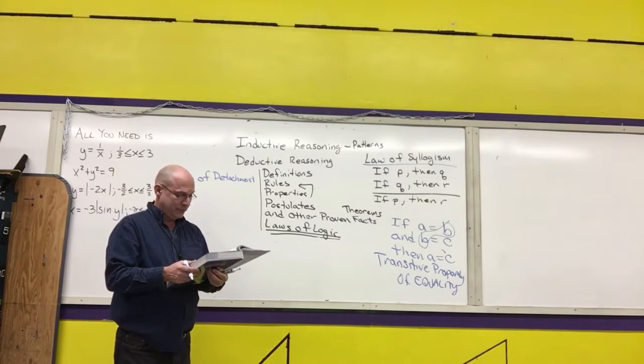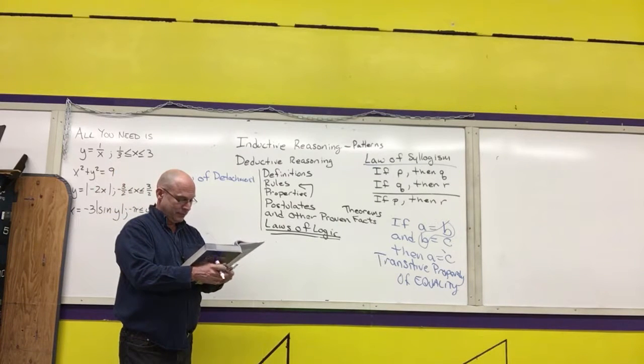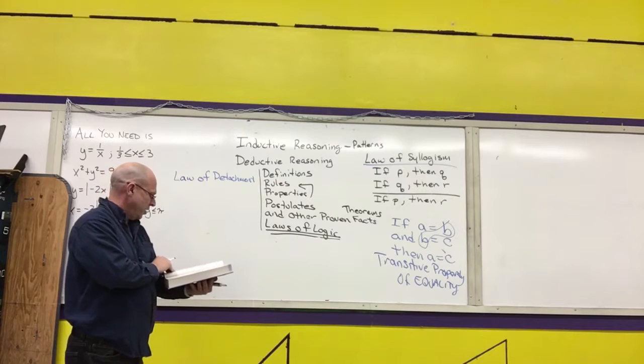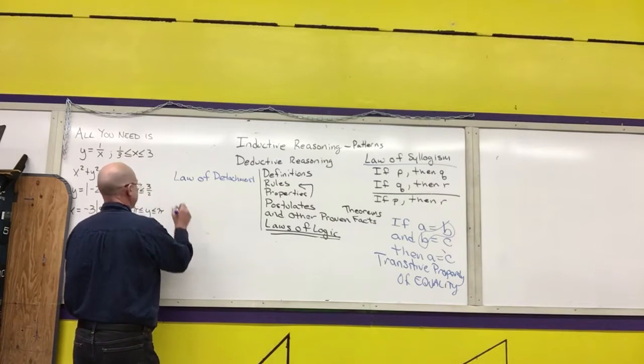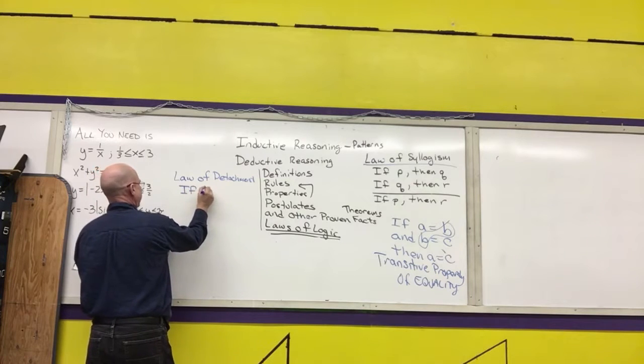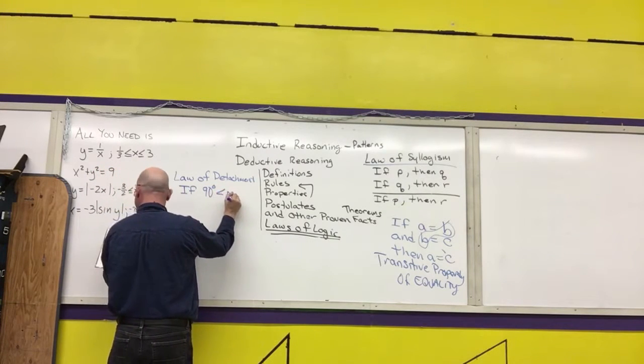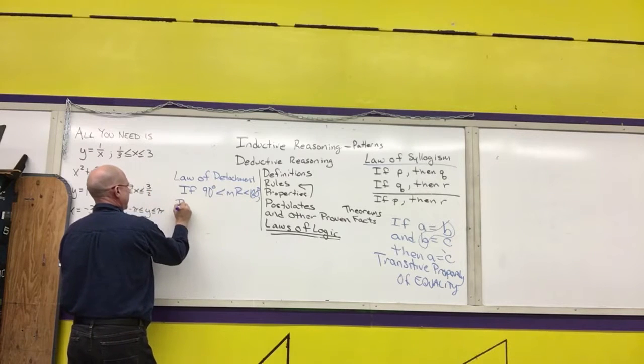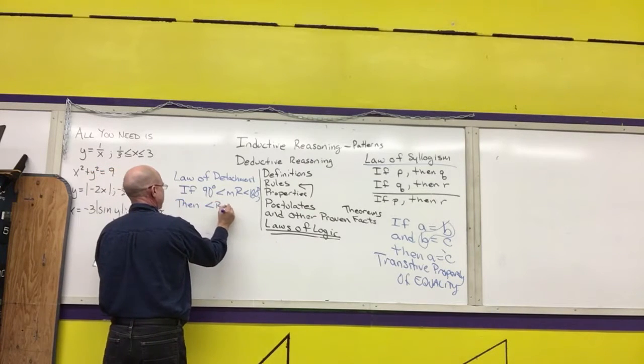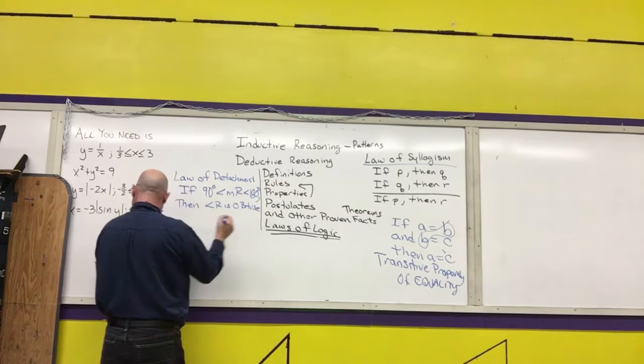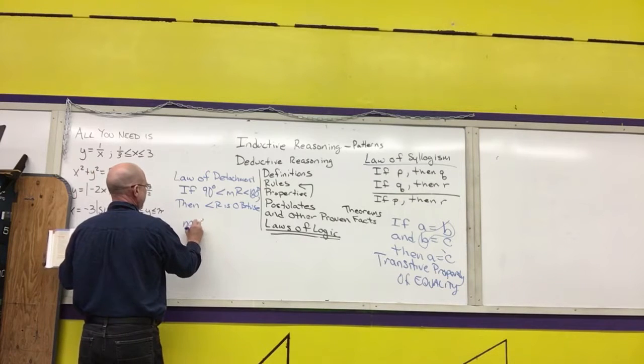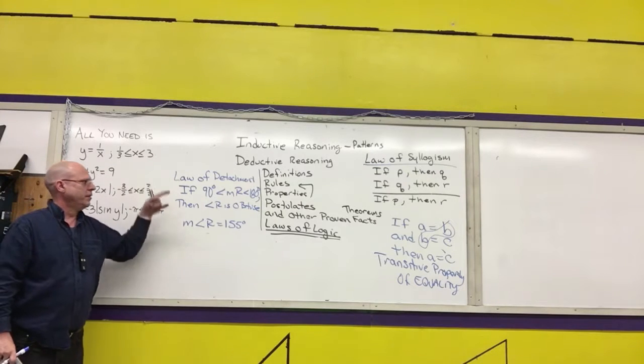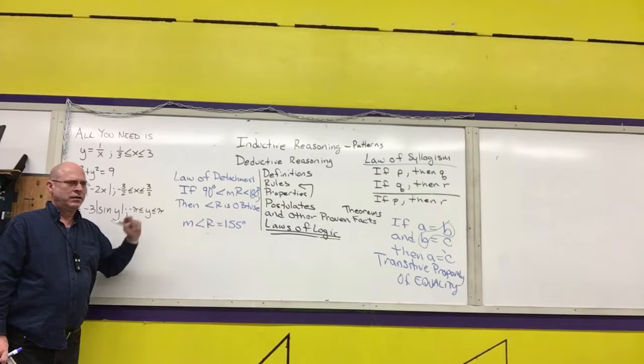So please open your page to page 79. You are there? Okay actually, turn it to page 80, guided practice 1. So guided practice 1 says, if 90 degrees is less than the measure of angle R, which is less than 180 degrees, then angle R is obtuse. I look at this thing, and I know the measure of R is equal to 155 degrees. Based off of this if-then statement and this fact, what can you say?